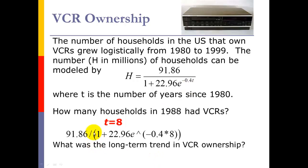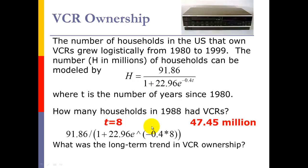We take that eight, go to the formula, and plug in eight for the T value. I highly recommend using parentheses — lots of parentheses — because you've got parentheses for the denominator with many pieces. Also, in the exponent there are two pieces: the negative 0.4 and the eight, which are multiplying, so we need parentheses for that piece too. When you crunch that out, you get 47.45 million households.